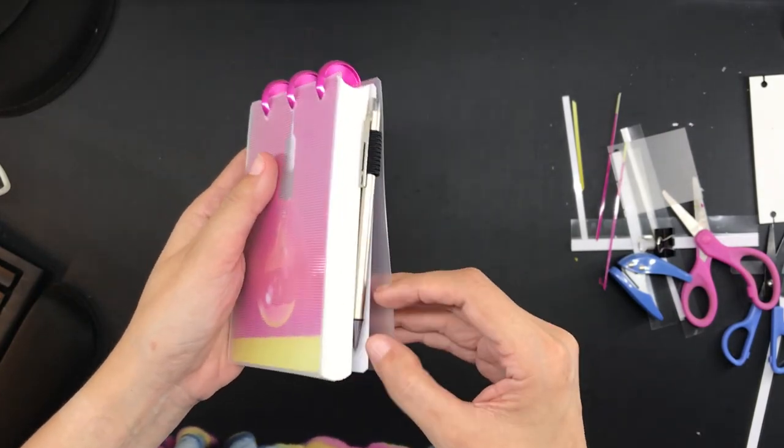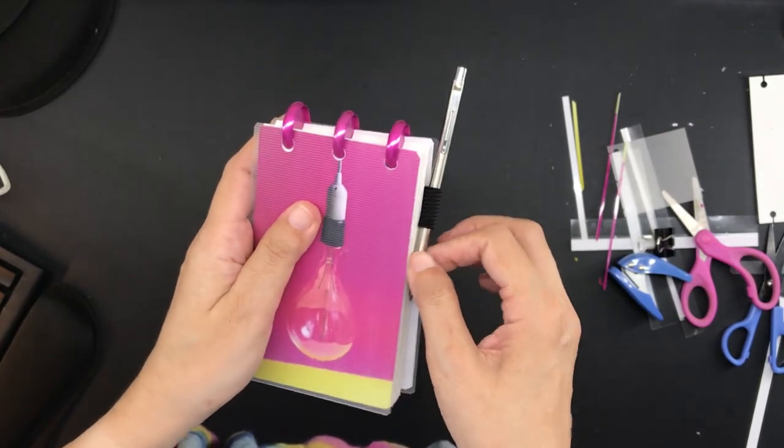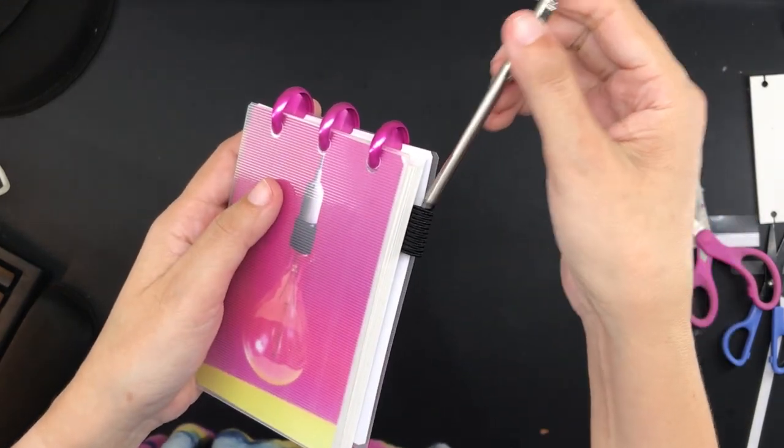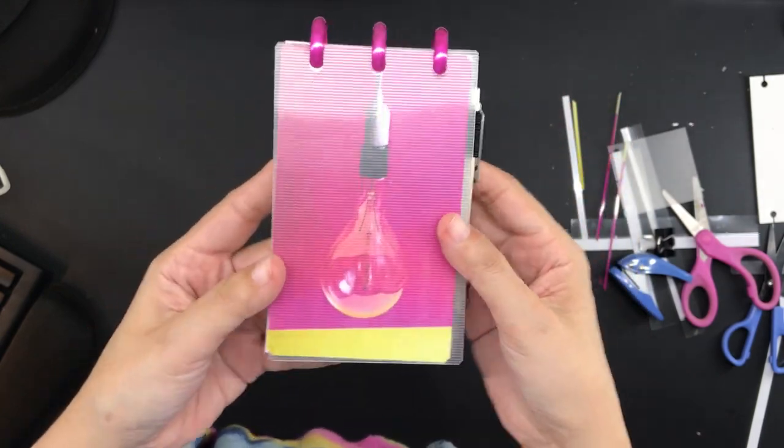And that is how I made a disc bound flip book using 3x5 index cards. I hope you enjoyed this video and I hope you got some ideas from here. Thanks for watching. Bye!